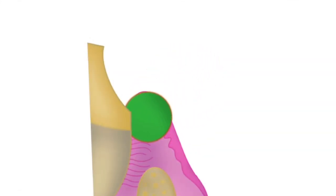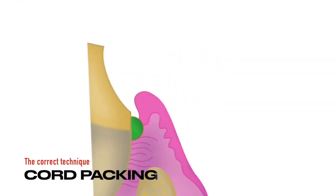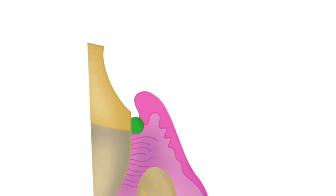Now, gingival retraction is very important while making impressions of your crown. But how do you pack the cord into the sulcus correctly? We'll find out in this video.